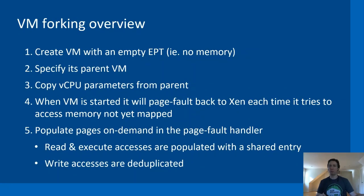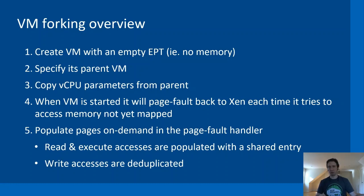The idea is to create a VM with an empty EPT — so the VM effectively has no memory. We specify its parent VM, which is a fully booted, functional VM. From the parent we copy the vCPU parameters into the fork so hardware state is equivalent. When this fork VM starts, it page faults to Xen because it has no memory. In the EPT page fault handler, we populate the page table on the fly: for read and execute accesses we use shared entries, but for write accesses we deduplicate the memory and assign it to the fork VM.